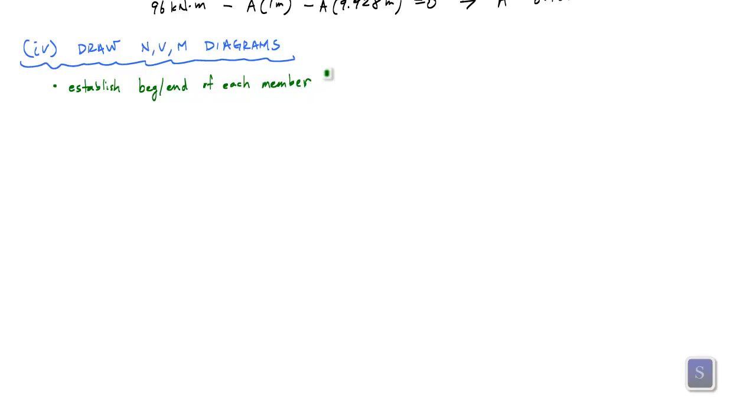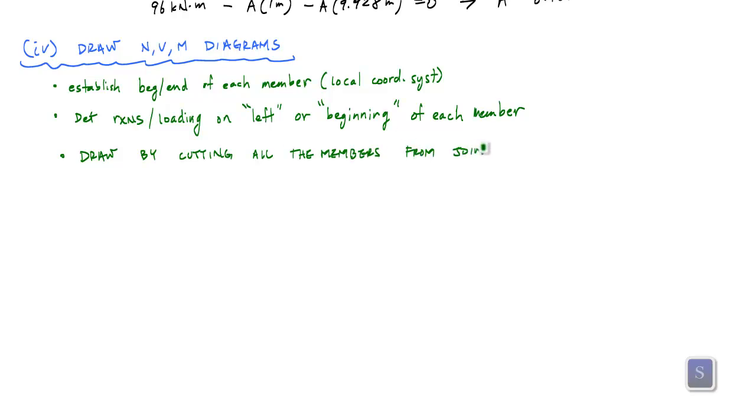It's also the same as establishing a local coordinate system for each member. What it does, it tells the person who sees your results which side is what, what are positive moments, what are negative moments. The other thing I like to do is make sure that I know the reactions or the loading on the left side or beginning of each member. Now I'm going to draw by cutting all the members from their joints. This is what I might call a blown up drawing.